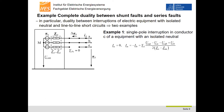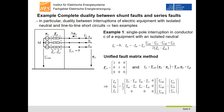The single-pole interruption in conductor C of an equipment with isolated neutral is shown in the figure on the left-hand side. The current in conductor C is zero. Due to the isolated neutral, the currents in conductors A and B are opposite and equal. They can be calculated using a mesh between the branches of conductor A and B. The currents depend on the two voltage sources of conductors A and B and the double positive sequence impedance. The same result can be derived directly by applying the unified fault matrix method to the branch equation system. The current IC is zero according to the fault condition, setting the neutral admittance to zero is easily possible, and the three-phase structure is maintained.